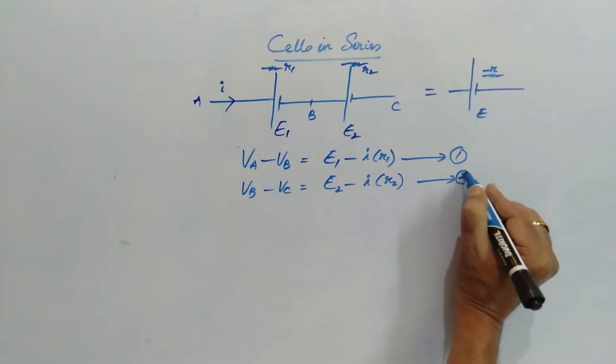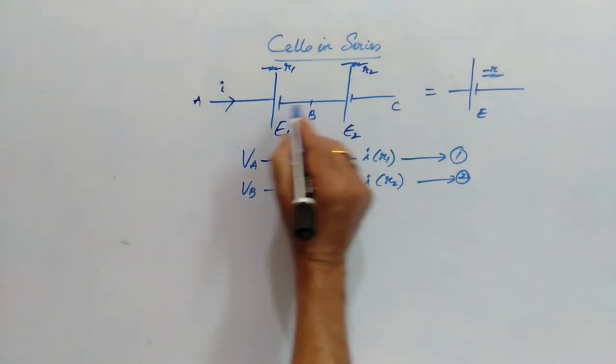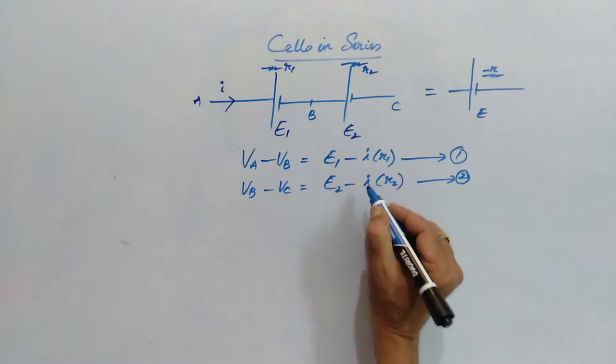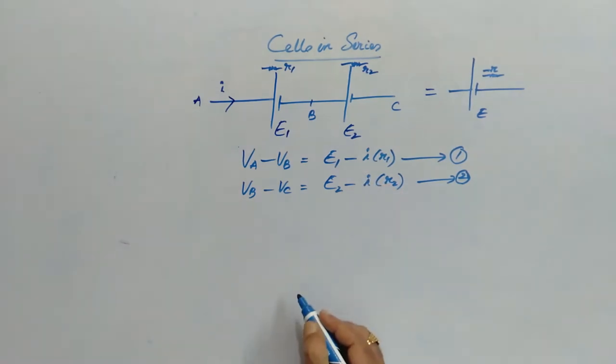Remember when the cells or any electrical appliances are in series, the current remains the same. So I have taken I is same for both.